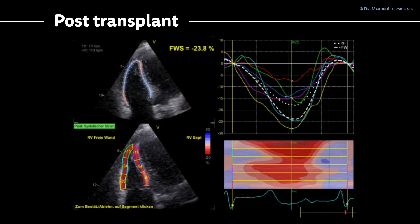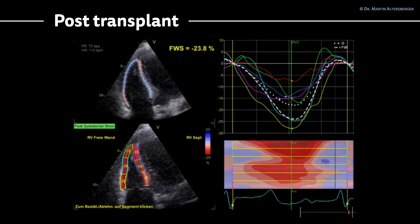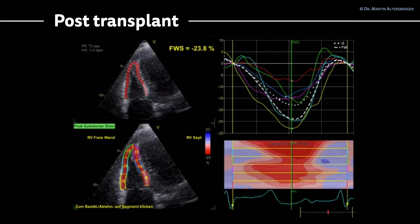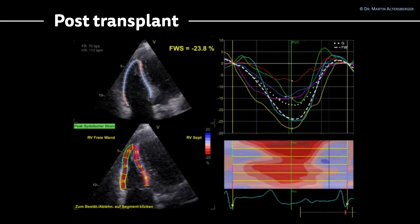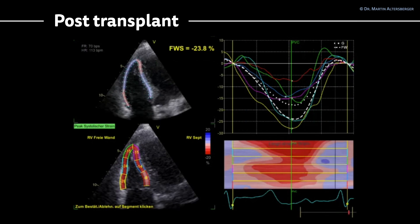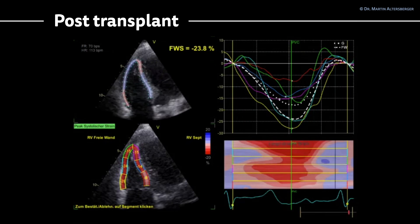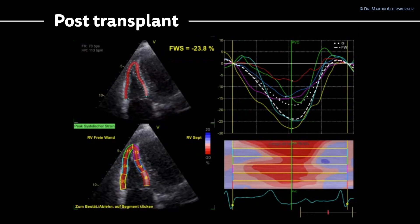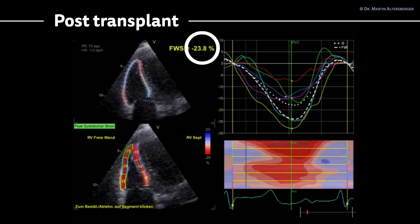Regarding right ventricular strain in the transplanted patient — it is very important to also assess the right ventricle, as it provides valuable information on how the patient is doing and the overall prognosis. In this specific case, the free wall strain of minus 23.8 is absolutely normal.